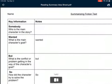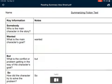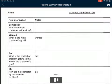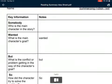I'm just going to go through this sheet. You can send this off to Notability. The way it works is there are two columns. We have the key information. We have Somebody: who is the main character in the story? And then right next to it, we have the Notes section. That's where you'd write down the person.